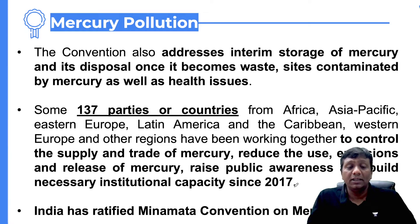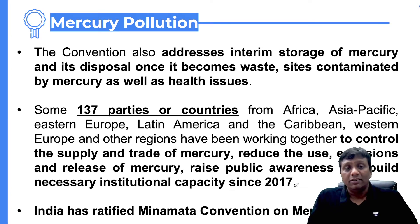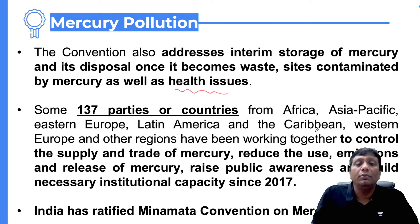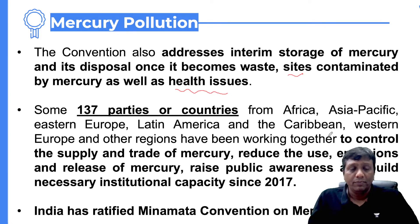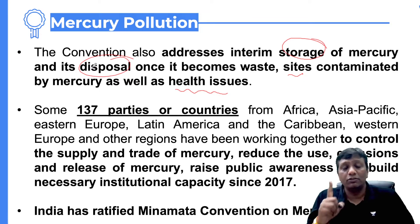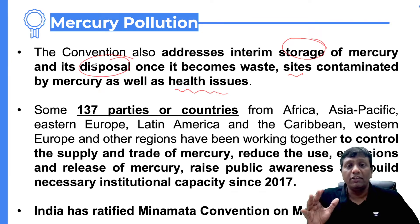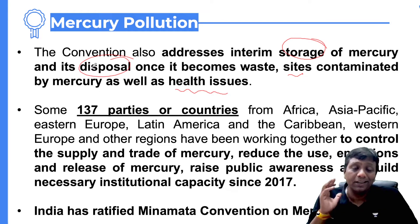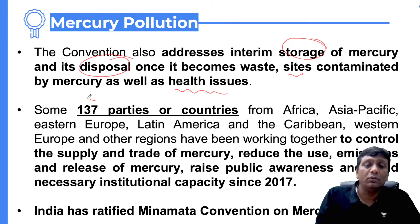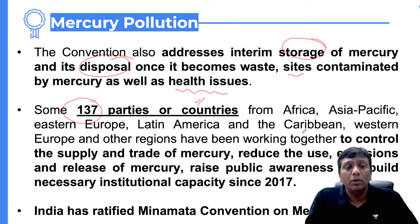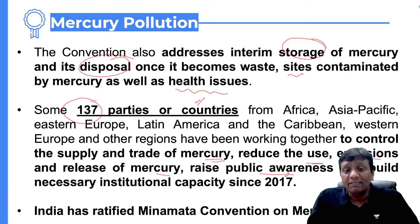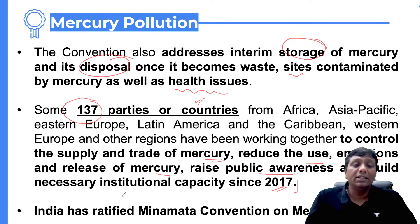People working in thermometer and pressure instrument manufacturing industries are getting exposure to mercury, which is very dangerous. Mining sites are contaminated because of mercury. The Minamata Convention also has provisions for proper storage and disposal of mercury waste — it should be stored and disposed of properly, otherwise it creates health issues and human exposure. Around 137 countries are ready to follow controls on supply and trade of mercury, reduce emissions, and raise public awareness, starting since 2017 when the convention came into force.